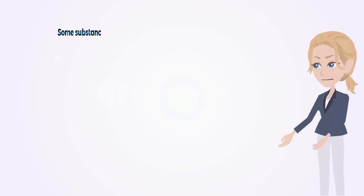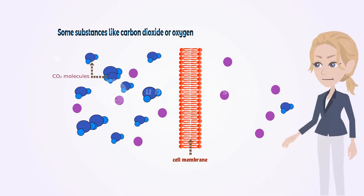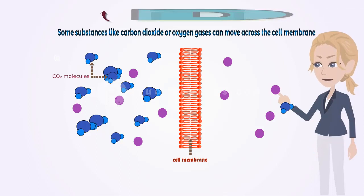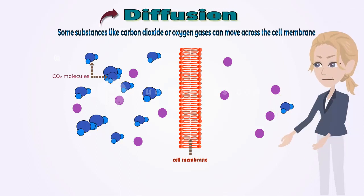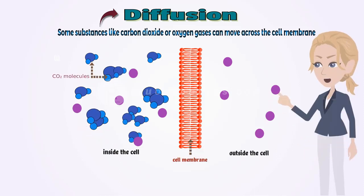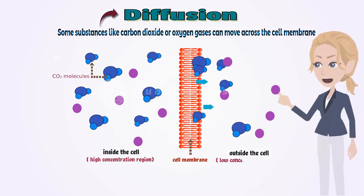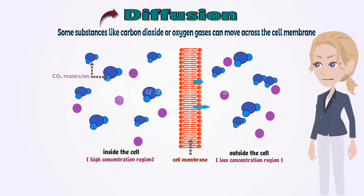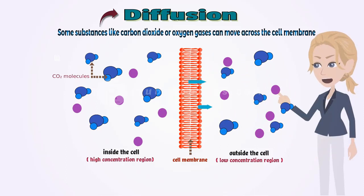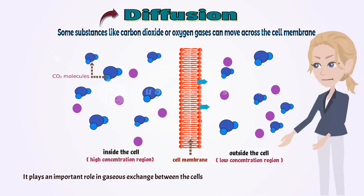Some substances like carbon dioxide or oxygen gases can move across the cell membrane by a process called diffusion. It means there is a difference of concentration of CO2 inside and outside of a cell. CO2 moves out of the cell from a region of high concentration to a region of low concentration outside the cell by the process of diffusion. So diffusion plays an important role in gaseous exchange between the cells as well as the cell and its external environment.